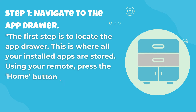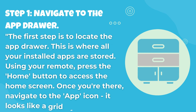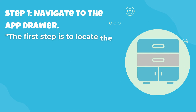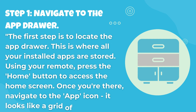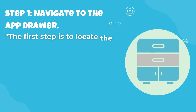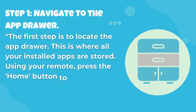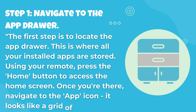Navigate to the app drawer. The first step is to locate the app drawer. This is where all your installed apps are stored. Using your remote, press the home button to access the home screen. Once you're there, navigate to the app icon — it looks like a grid of squares.